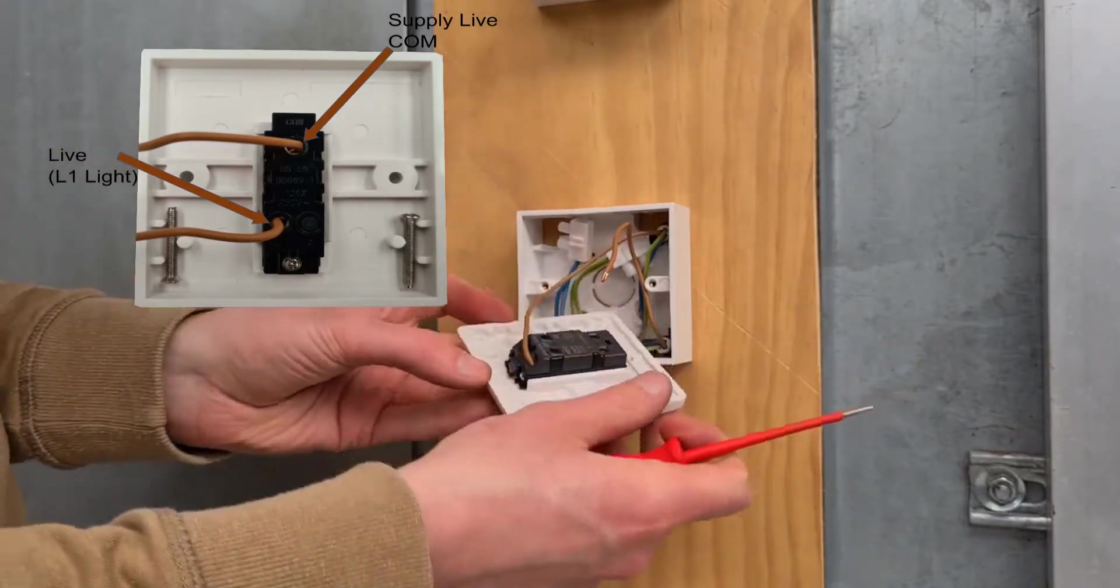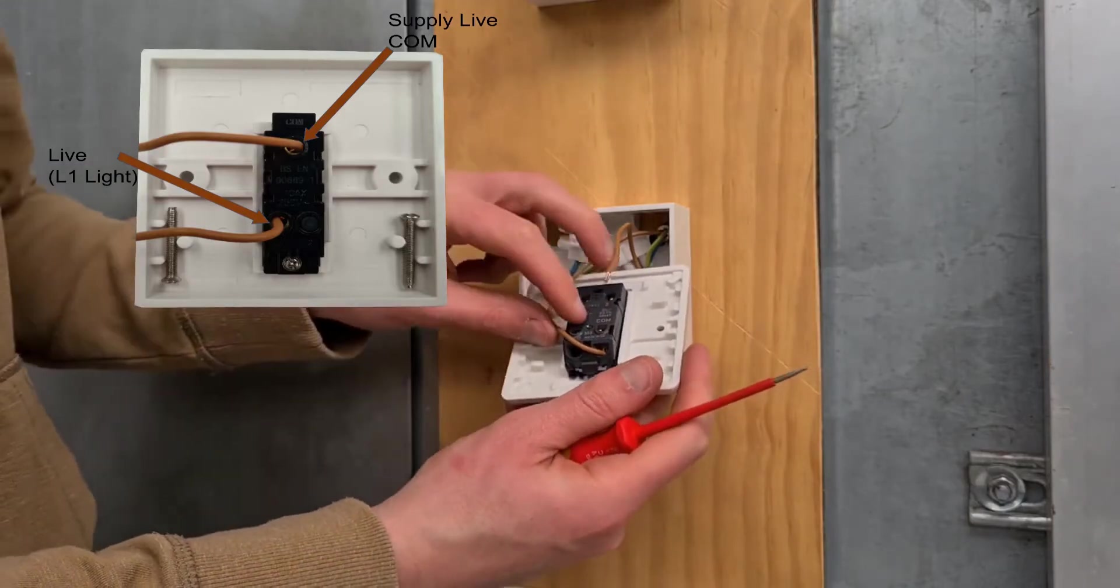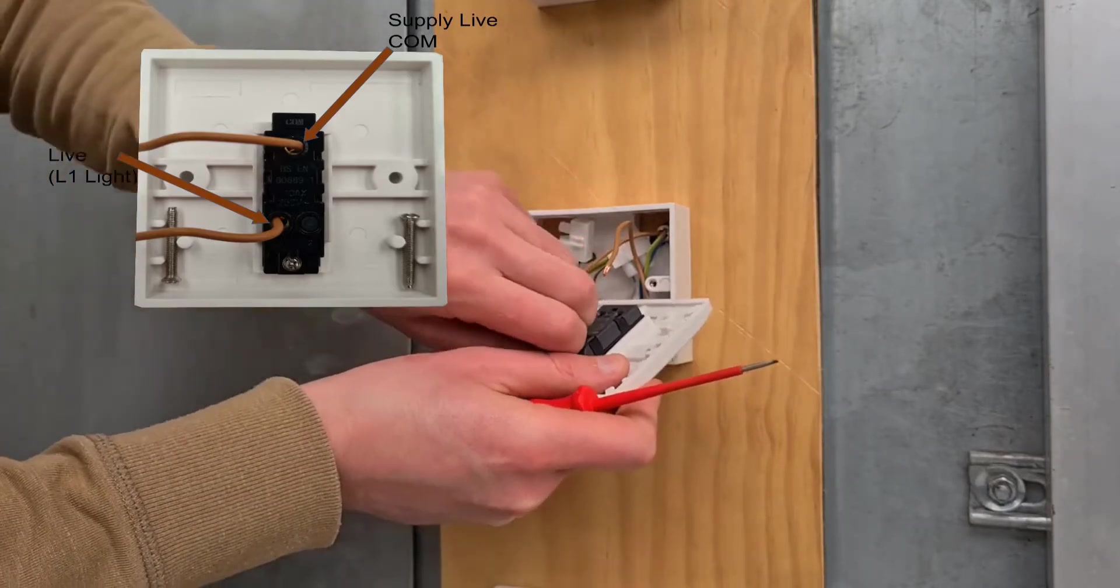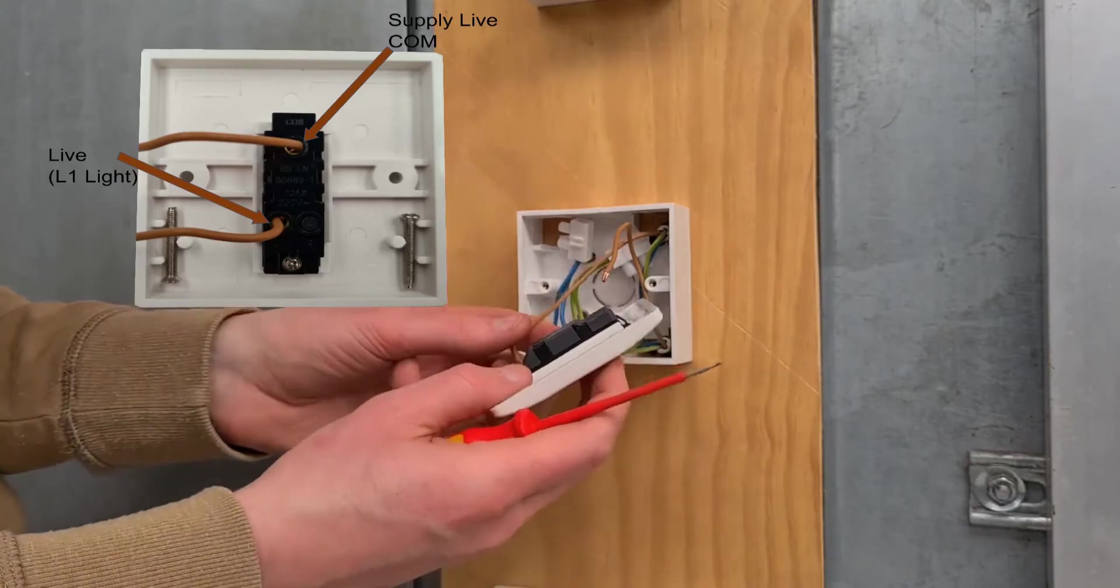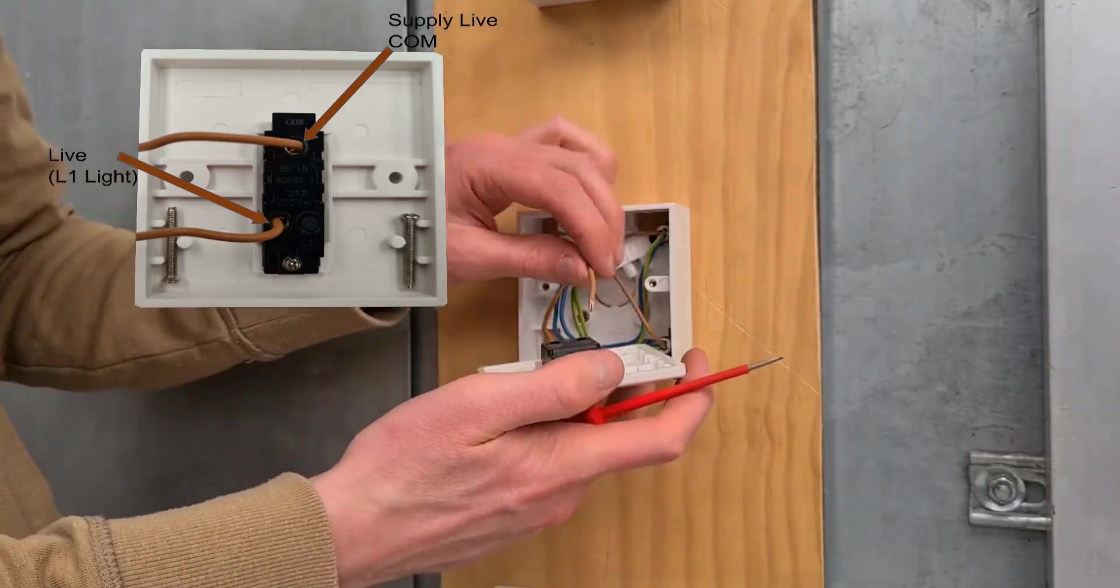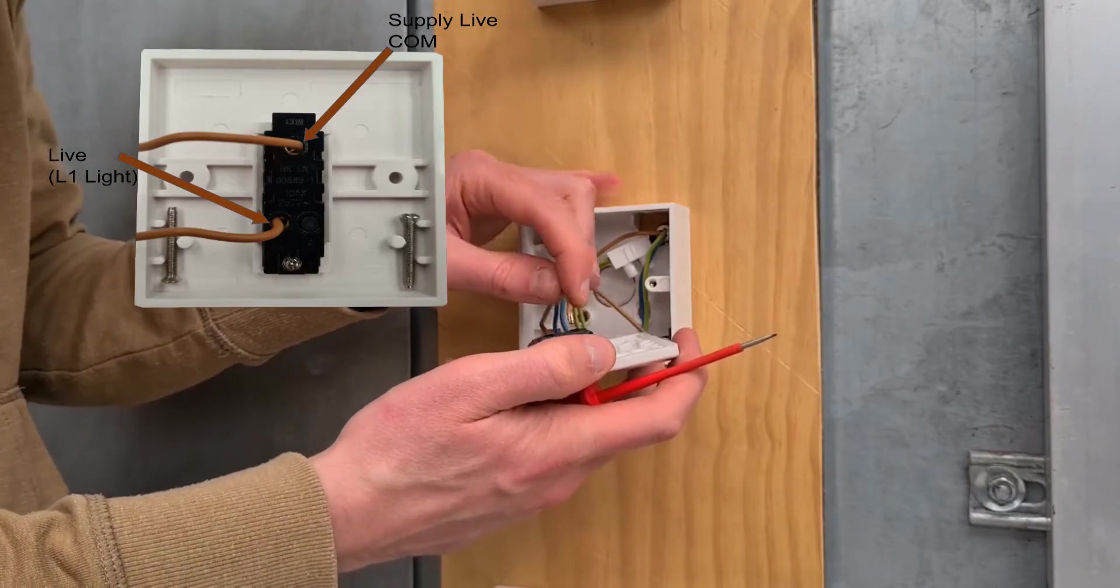Check all cores are securely terminated by pulling each individual core. If there is a loose core, open the screw terminal and re-tighten with an insulated screwdriver until the exposed copper is connected securely to the terminal screw.